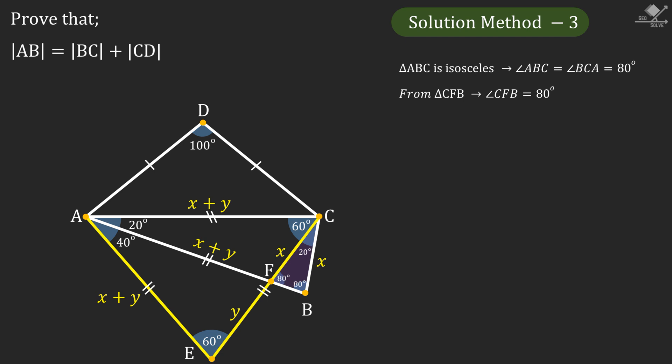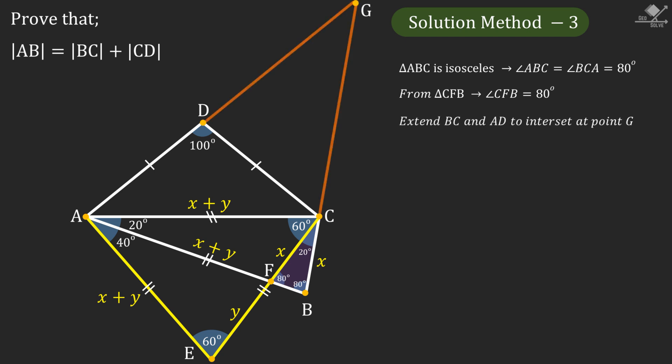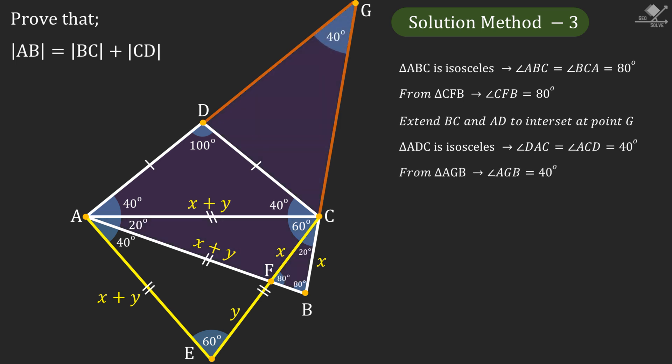Now let's extend line segments BC and ADE so that they intersect at point G. From triangle DAC we know that the base angles are 40 degrees. Focusing on triangle AGB, we can see that angle AGB is 40 degrees. Now focusing on triangle ACG, we can see that its base angles are equal and it's an isosceles triangle, so its corresponding sides must be equal, and from here line segment CG will be x plus y units.